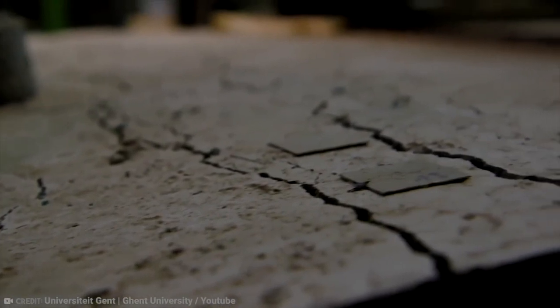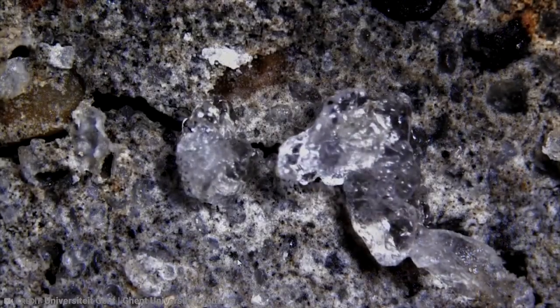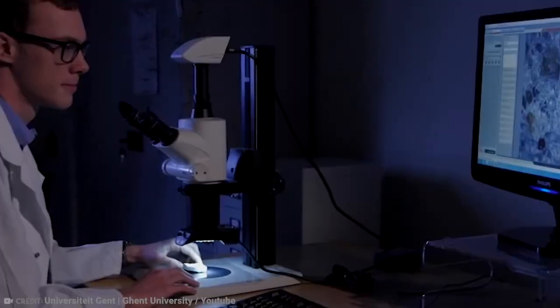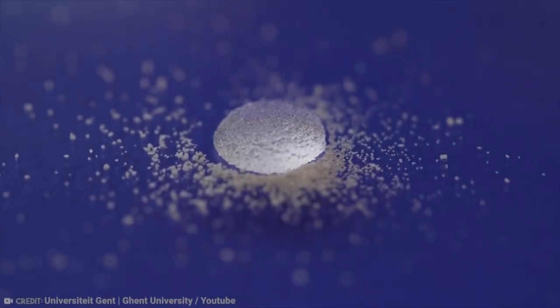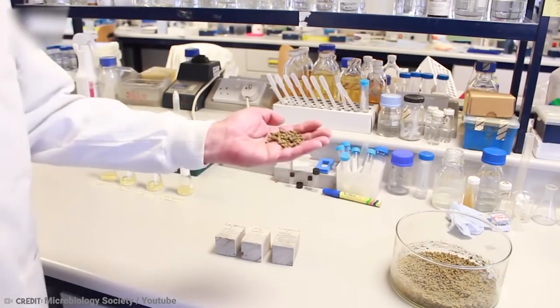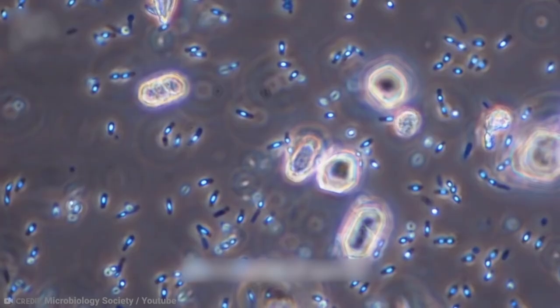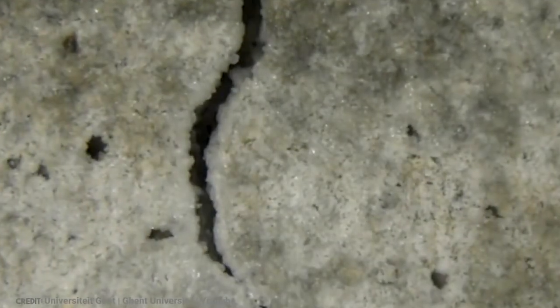By adding a bacillus bacteria to it as it's being mixed, they've shown in tests that they can actually encourage the concrete to fix itself. There are three known species that produce a form of limestone when they're exposed to calcium and carbon dioxide, and if they are contained within capsules in the concrete, these will dissolve and release the bacteria when a crack forms, and they'll get to work filling in the hole, so it's virtually as good as new.